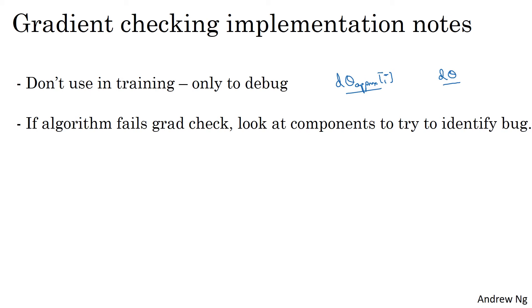Second, if an algorithm fails grad check, look at the components, look at the individual components to try to identify the bug. What I mean by that is if d theta approx is very far from d theta, what I would do is look at the different values of i to see which are the values of d theta approx that are really very different than the values of d theta.